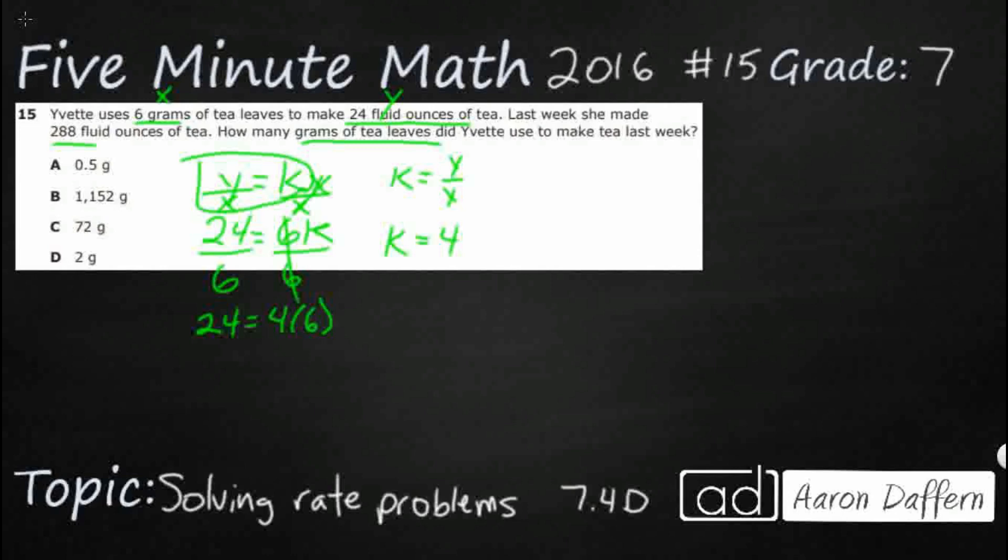So what I could do is I can take this. Now that I know what my constant is, I can apply this in the new situation. So last week, she made 288 fluid ounces of tea. So let's look at that.